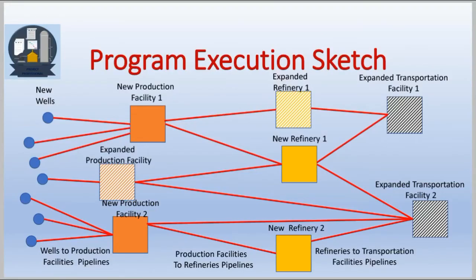Here we can see the execution of the program under different projects. There is a project for new wells, projects for pipelines, two projects for production facilities, projects for refineries, and a project for transportation facilities. All together there are seven projects.